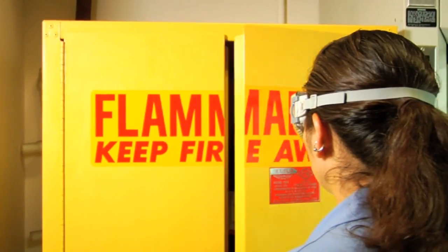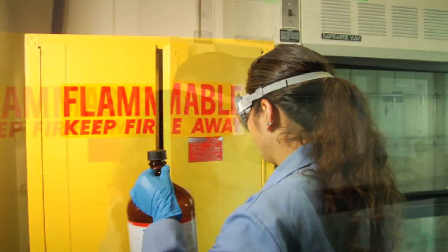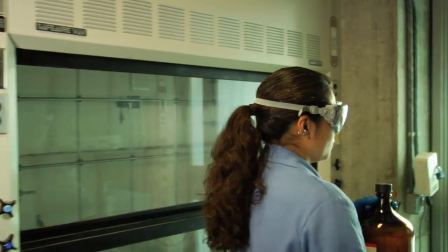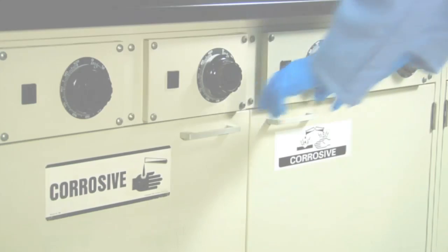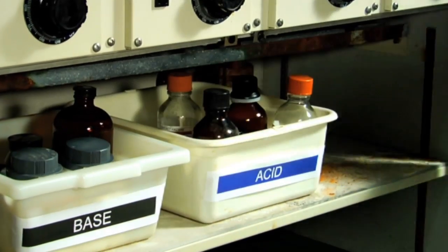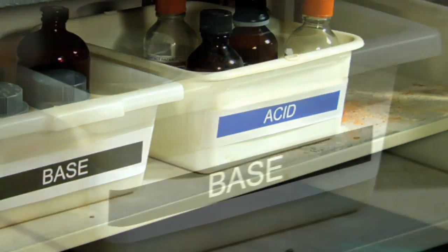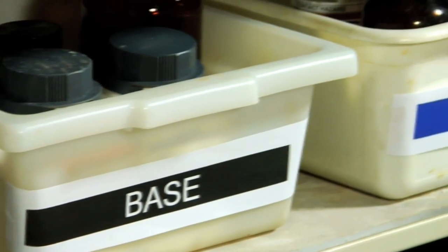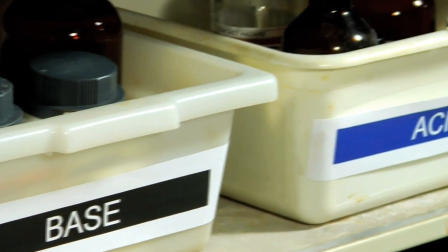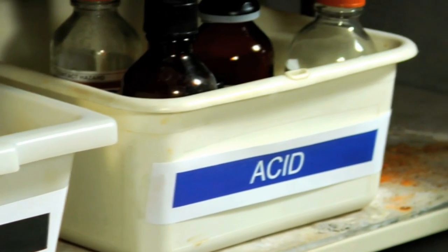Storage of chemicals and flammable or combustible liquids require specific attention. First and foremost, minimize the amounts of chemicals stored, especially flammable and combustible liquids. Acids and corrosives must always be stored in an acid-corrosive cabinet. Store acids in secondary containment, separate from bases. Additionally, organic acids must be stored in separate secondary containment from mineral acids.